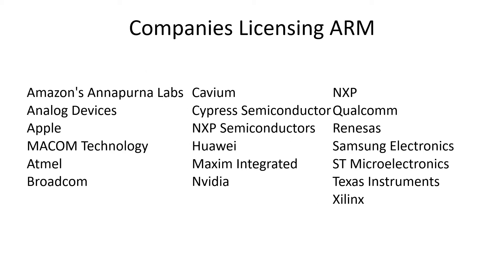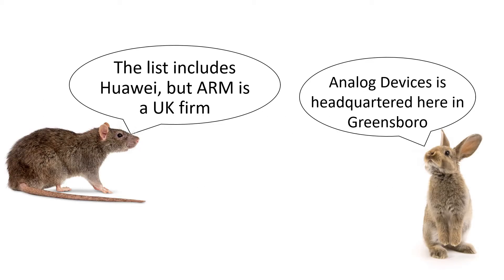Here's just a short list of some of the companies that license ARM technologies. The list includes Huawei — the country doesn't like that one, but ARM is a UK firm. Analog Devices is on the list, and they're headquartered here in Greensboro.